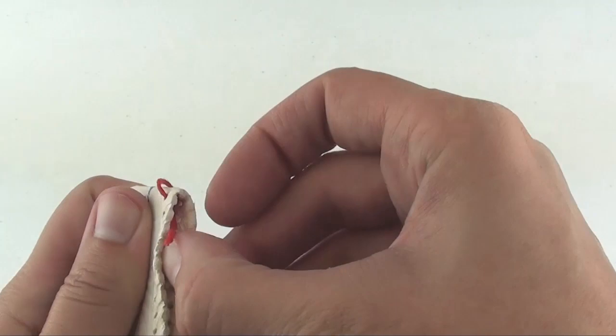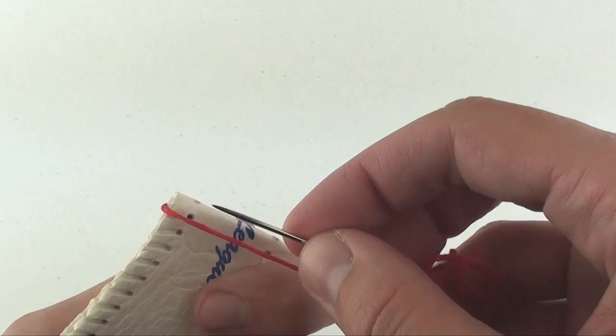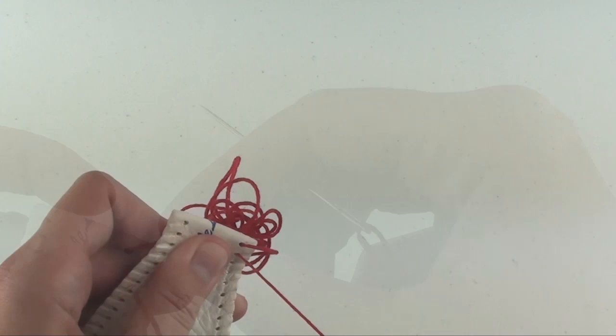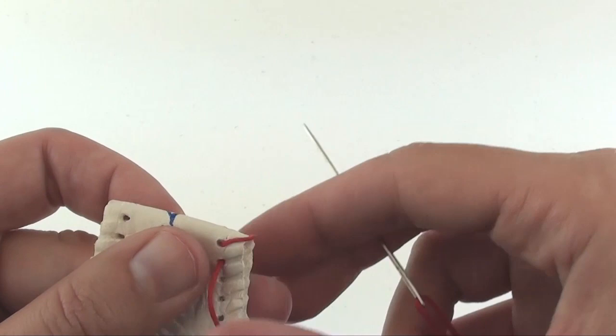Now proceed as you would normally sew. Enter from the back hole, go upwards towards the next front hole, and pull your thread. And again, enter the back hole, go up through the next front hole, and pull your thread.